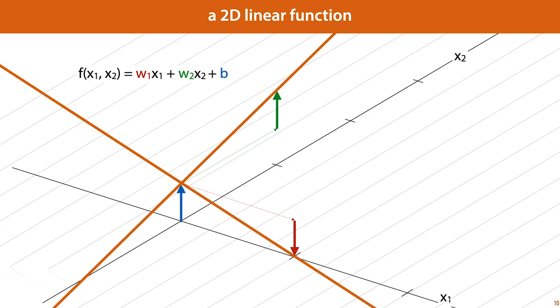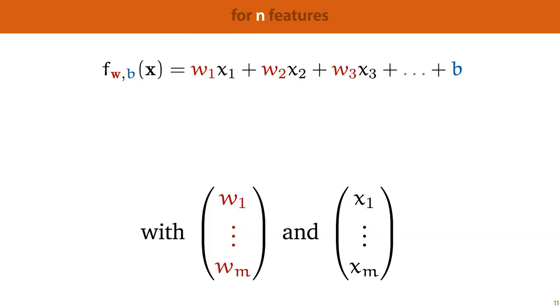If we have more than two features, we extend the function in the same way. For every feature, we introduce a weight, and the function is computed by multiplying each weight by its corresponding feature, and summing all of these multiplications together and adding b on the end. And since we have one weight for every feature, we combine these in a vector w, which has the same length as our feature vector x. We can then summarize the computation of this function f by using a dot product. The b stays in place, but the rest of the sum can be expressed as the dot product of w and x.